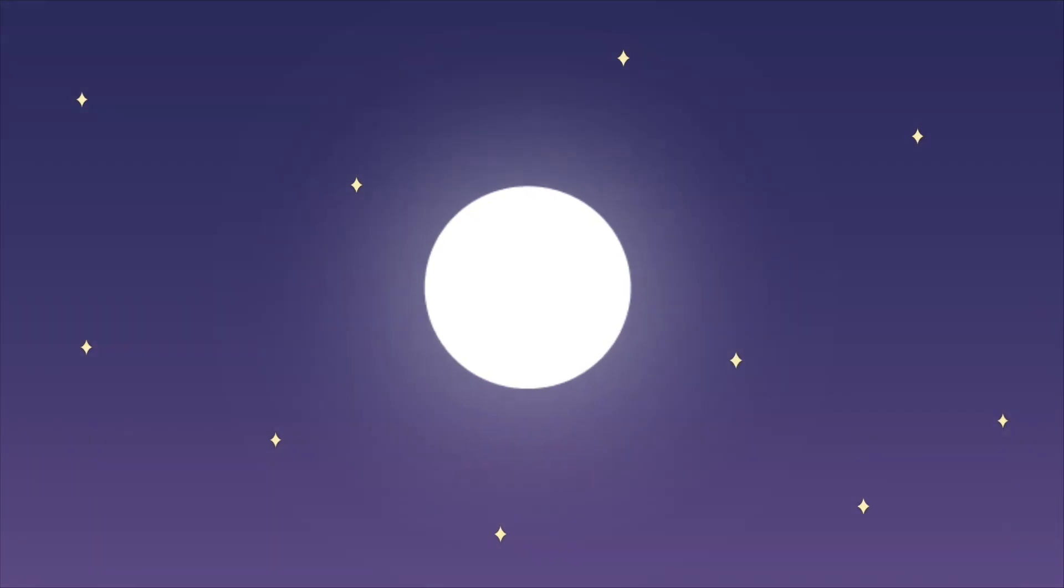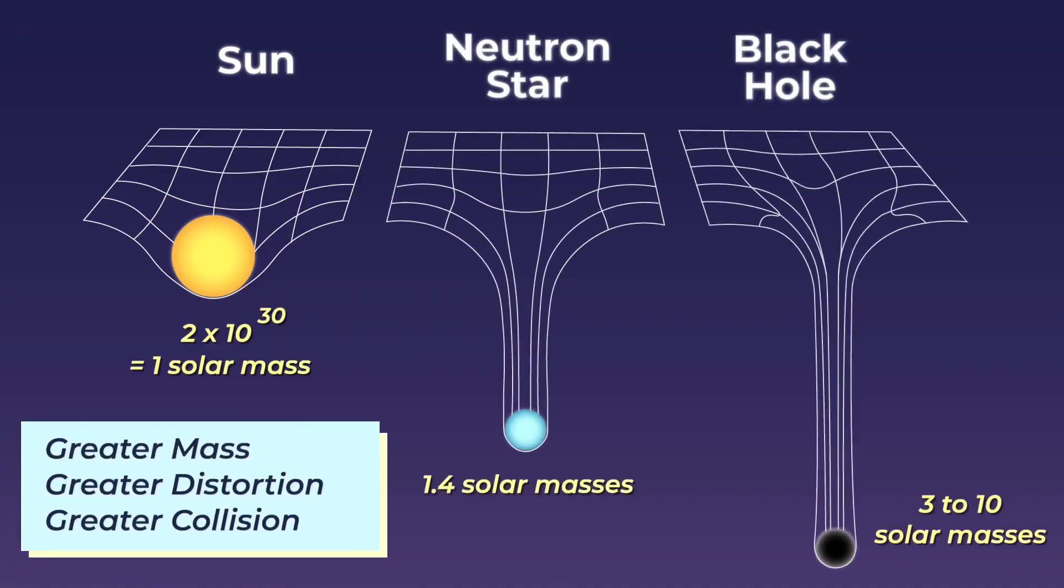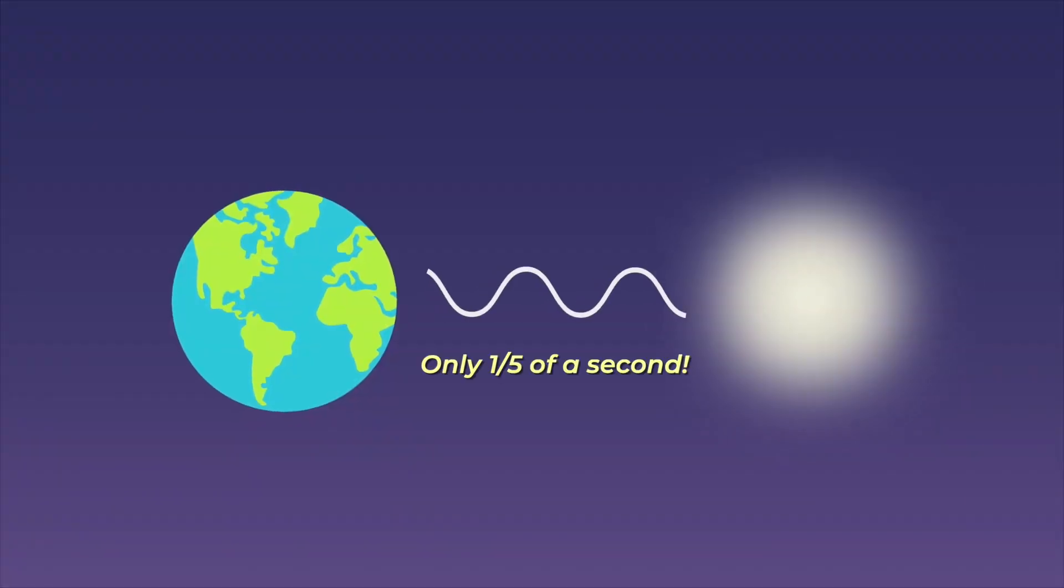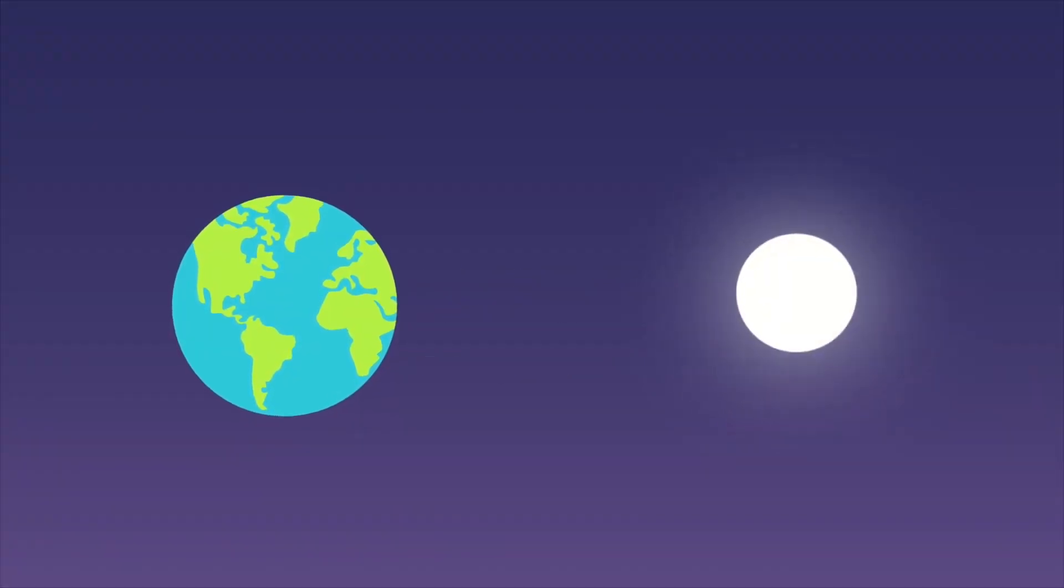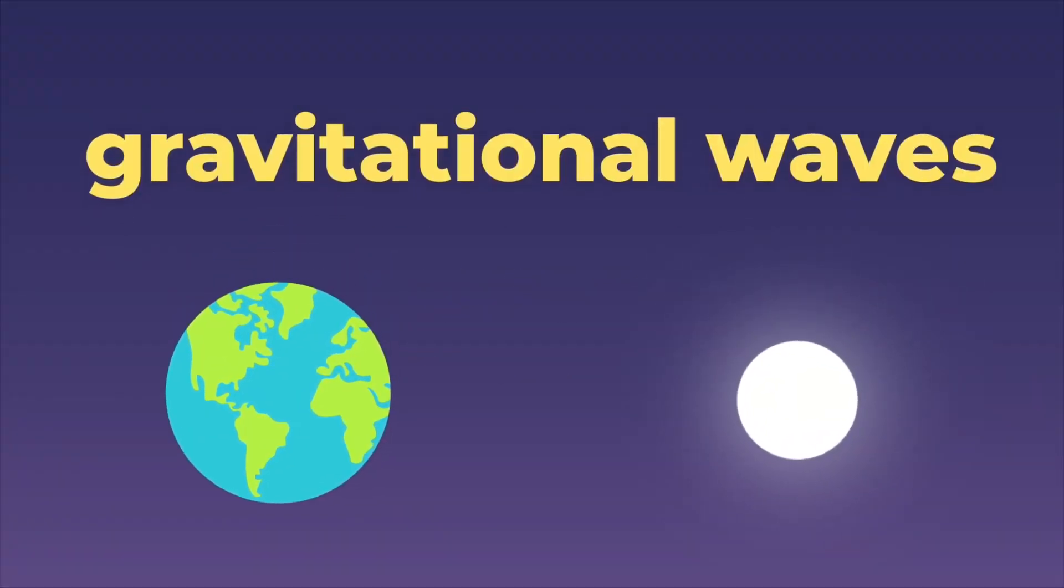This distortion in spacetime forms when two accelerating objects collide, forming a single, bigger mass. When objects are heavier, the greater distortion can result in an even greater collision. And the energy from this collision is what we can observe here on Earth, in the form of gravitational waves.